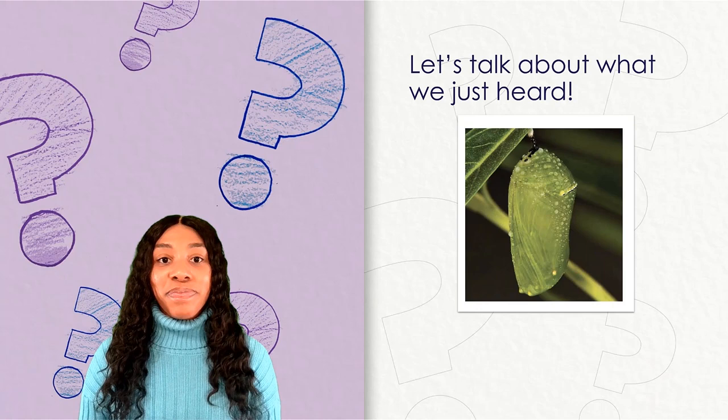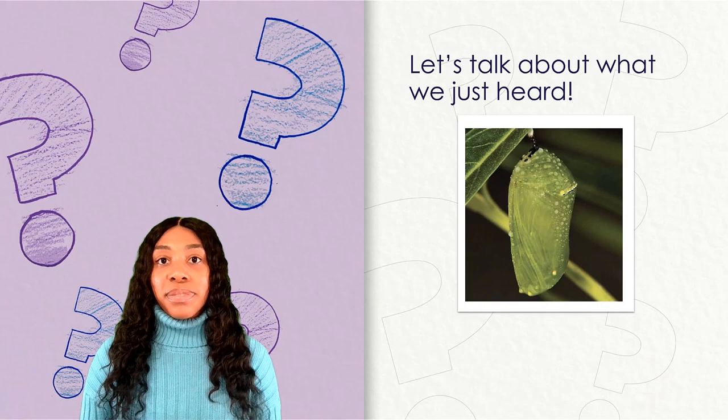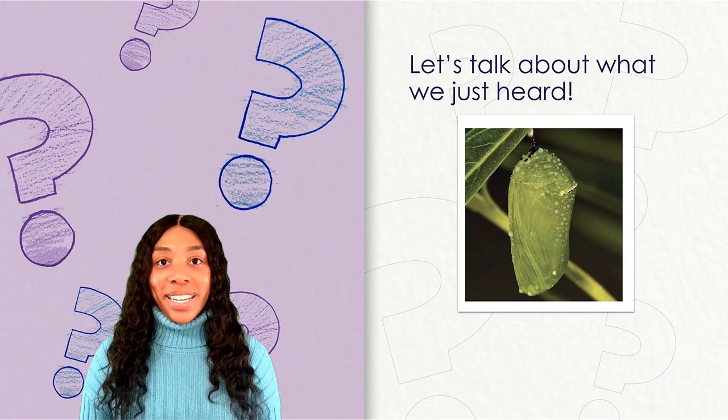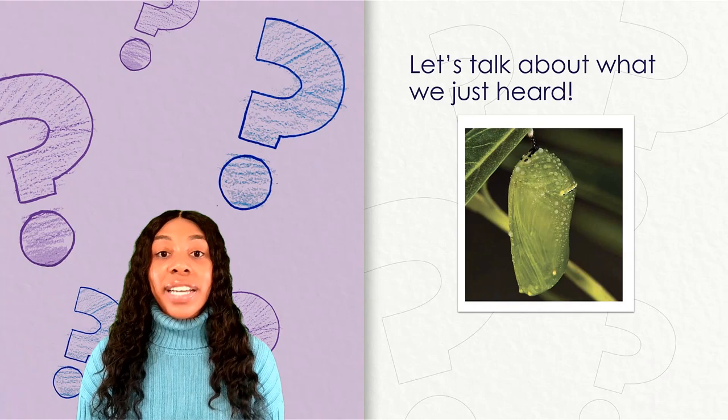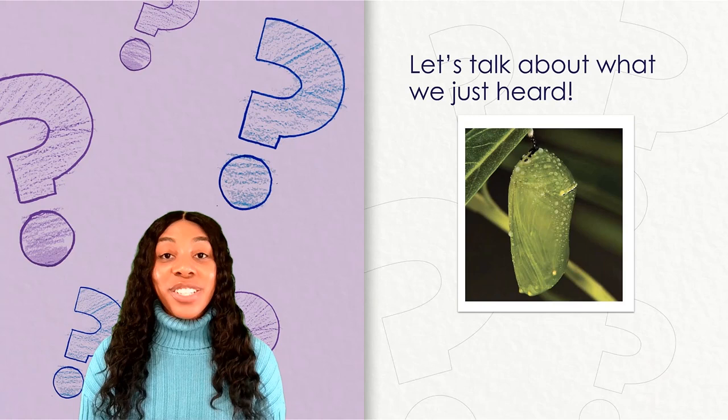The next question is: the adult butterfly emerges from its chrysalis. How would you describe the word emerges? To emerge means to come out or appear. Here is my last question: why does the larva need to shed its skin? The larva sheds its skin so it can grow because it is growing bigger.